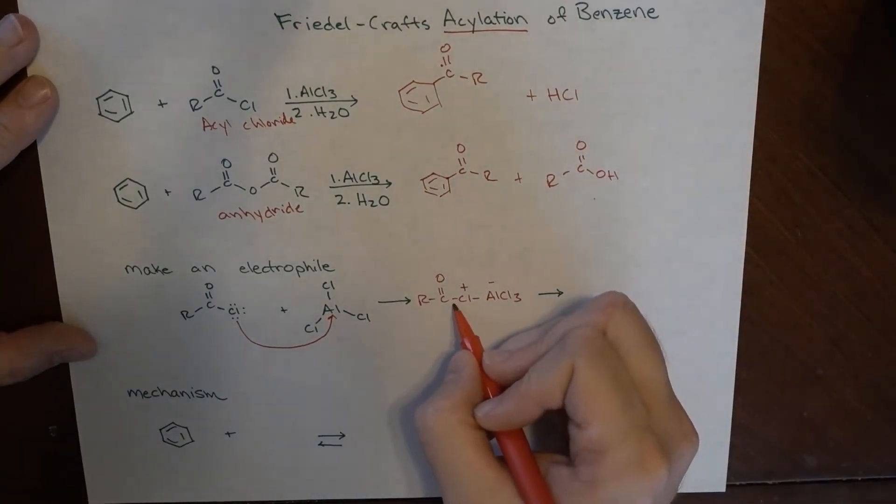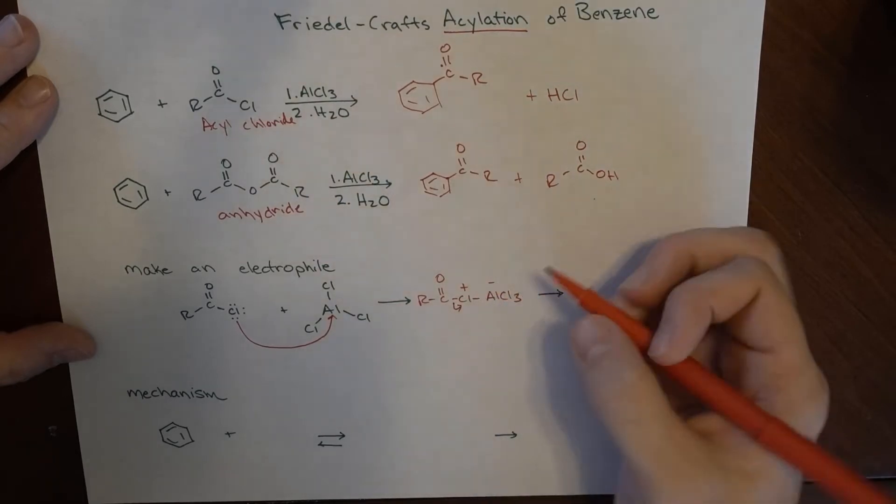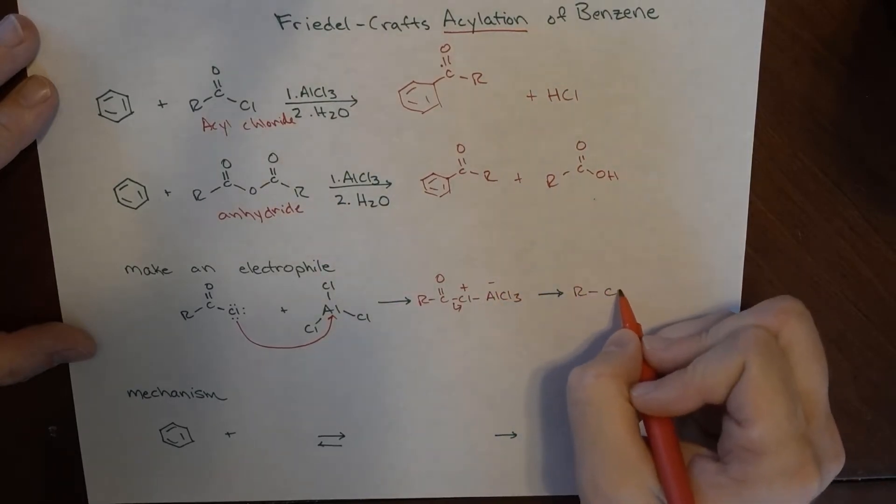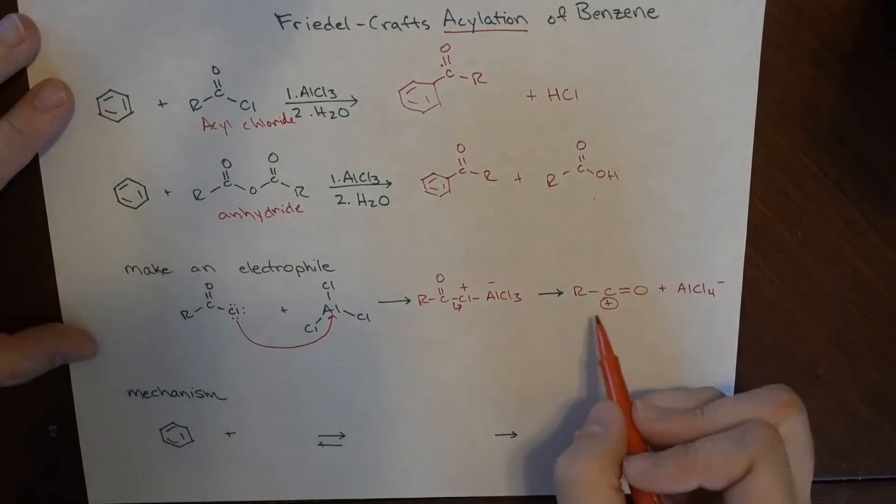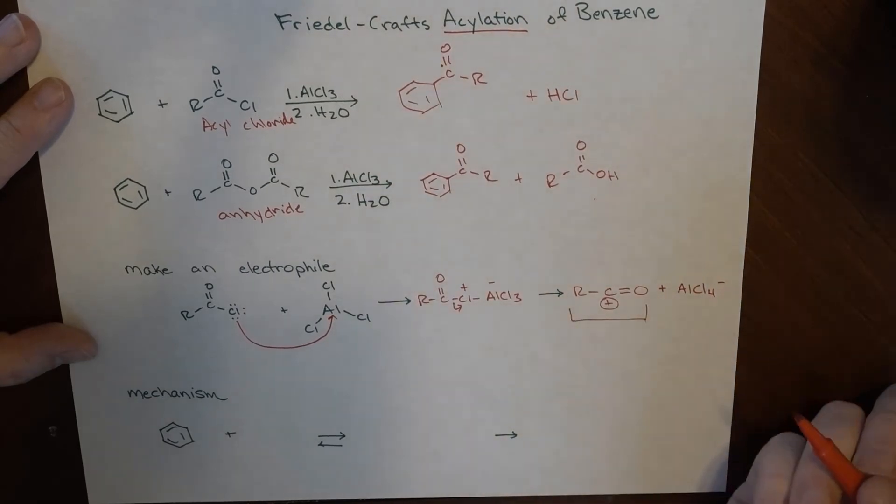So this will end up kicking those electrons off and what we have here is this species which is positively charged and an anionic AlCl4 minus. So this is the species that ends up undergoing reaction.